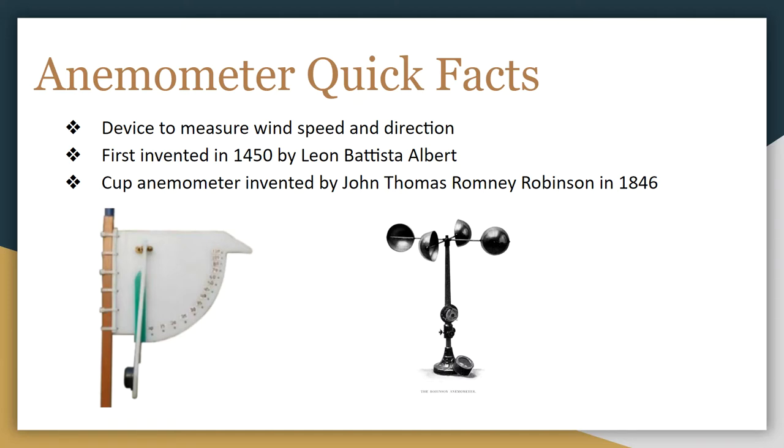And the way that you use a cup anemometer to actually measure wind speed and direction is by looking at the circumference or the distance that goes around the four cups if they were a circle and how many times the anemometer rotates in a minute. And because of those two things, you can get a measurement of how far it goes over time, which is what the speed is. Alright, let's get started.